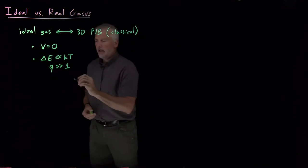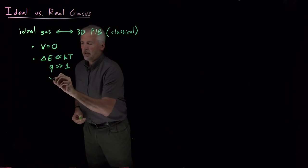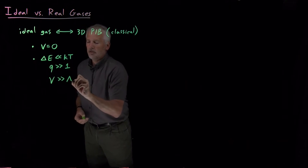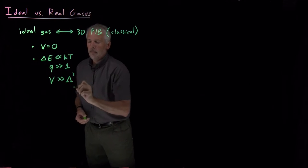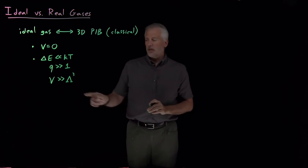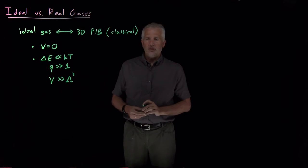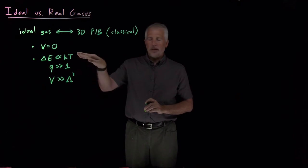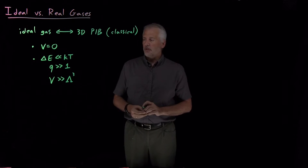Another way that we've expressed that is to say that the volume of the system is very big compared to lambda cubed, where lambda is the thermal de Broglie wavelength of the particles in the system. Under different circumstances, it might be easier to think about different versions of this assumption, but these all basically boil down to the same thing.